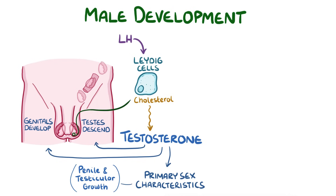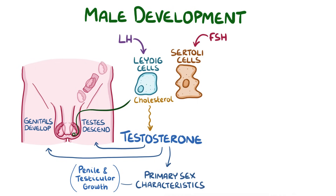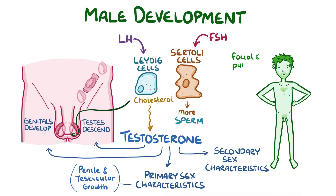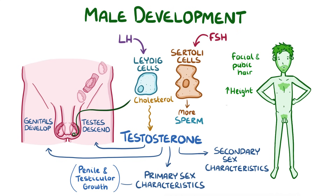In addition, the Sertoli cells of the testes respond to follicle-stimulating hormone by producing more sperm. Increased testosterone also leads to the development of secondary sex characteristics, like growth of facial and pubic hair, increased height and muscle mass, and a deepening of the voice.